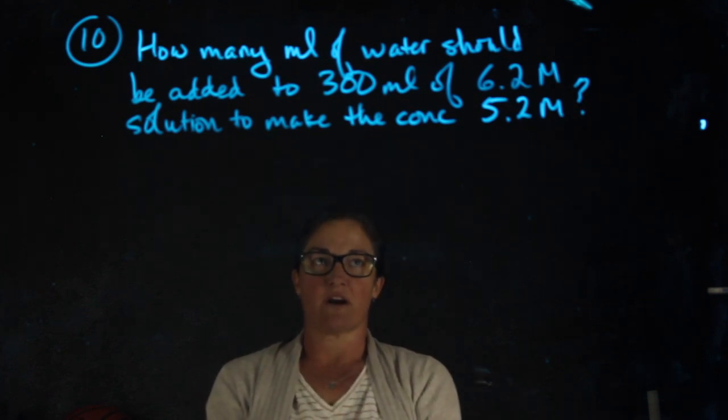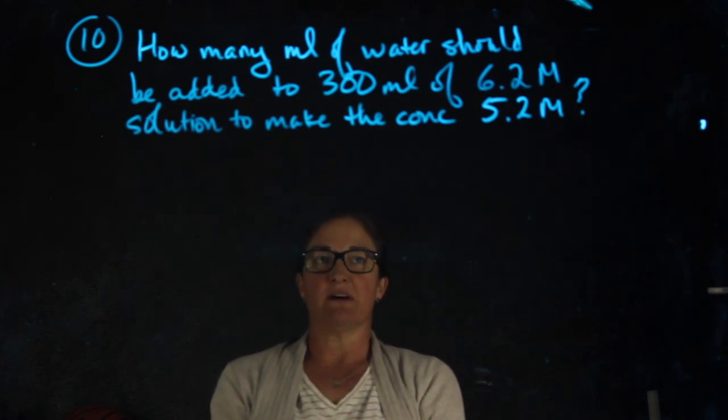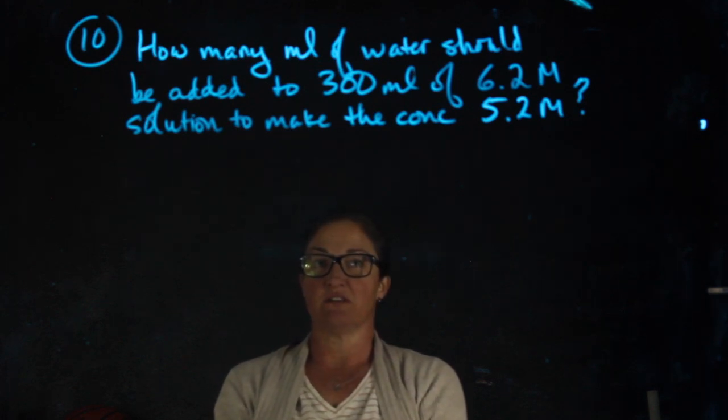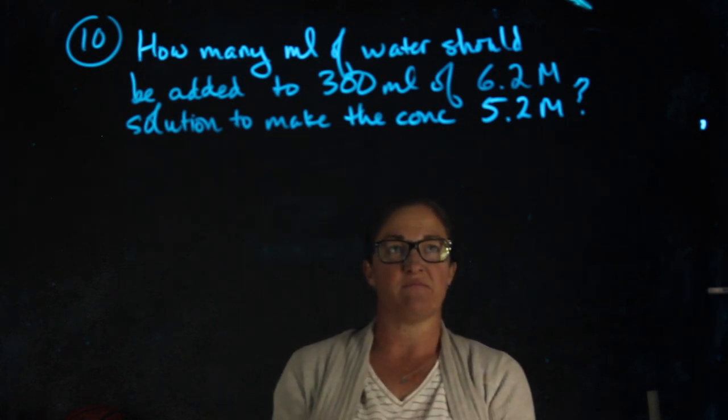Number 10. How many milliliters of water should be added to 300 milliliters of 6.2 molar solution to make the concentration 5.2 molar?